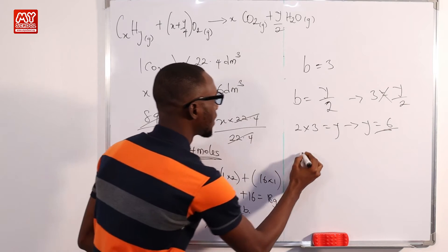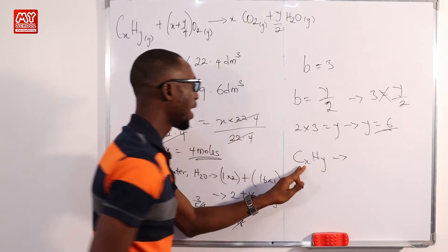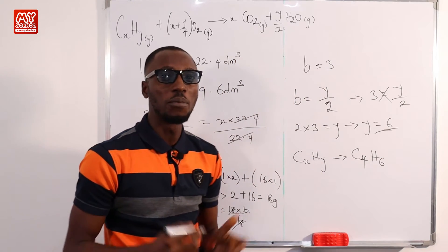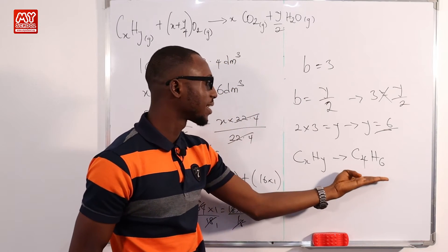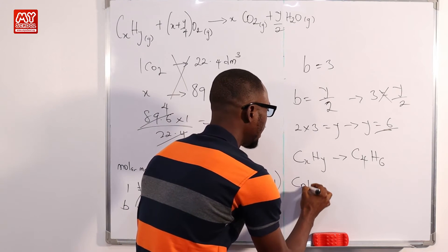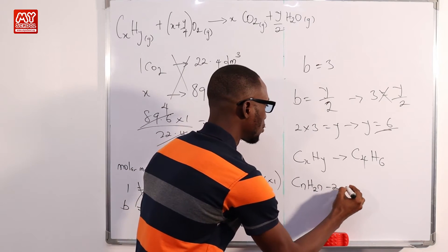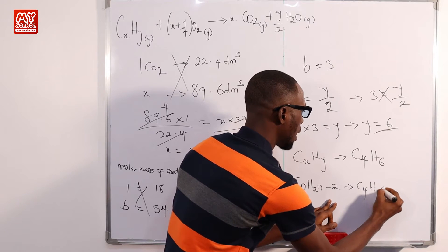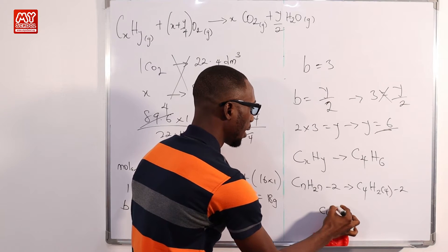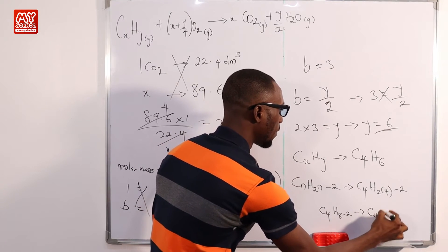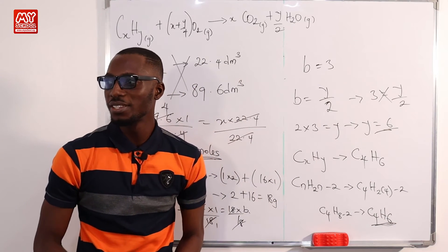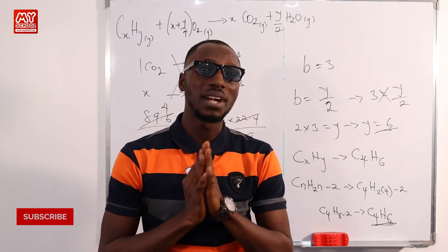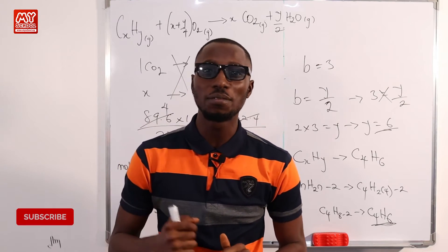From the reactant side CₓHᵧ, where x = 4 and y = 6, we get C₄H₆. Checking the homologous series: the general formula CₙH₂ₙ₋₂ applies here — for n = 4, that gives C₄H(2×4−2) = C₄H₆. Going through the options, this is option D. Don't forget to hit the like button, subscribe, and ring the bell notification.